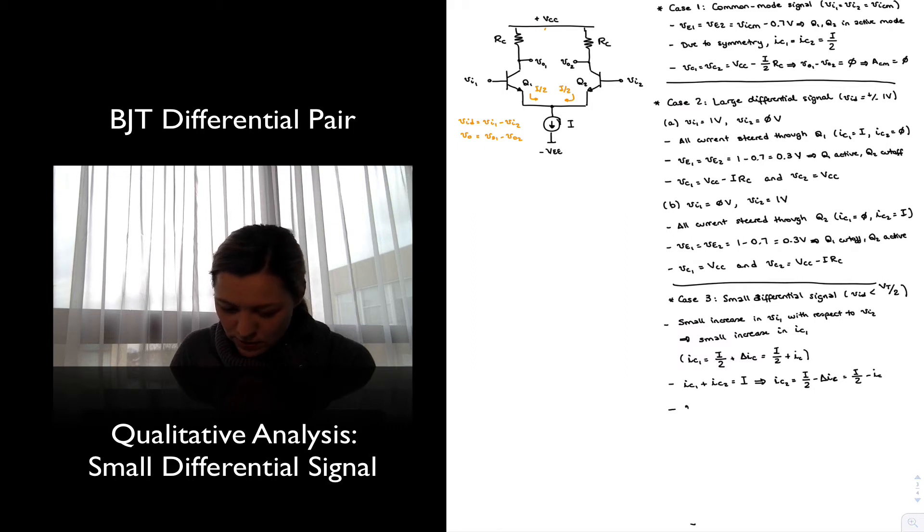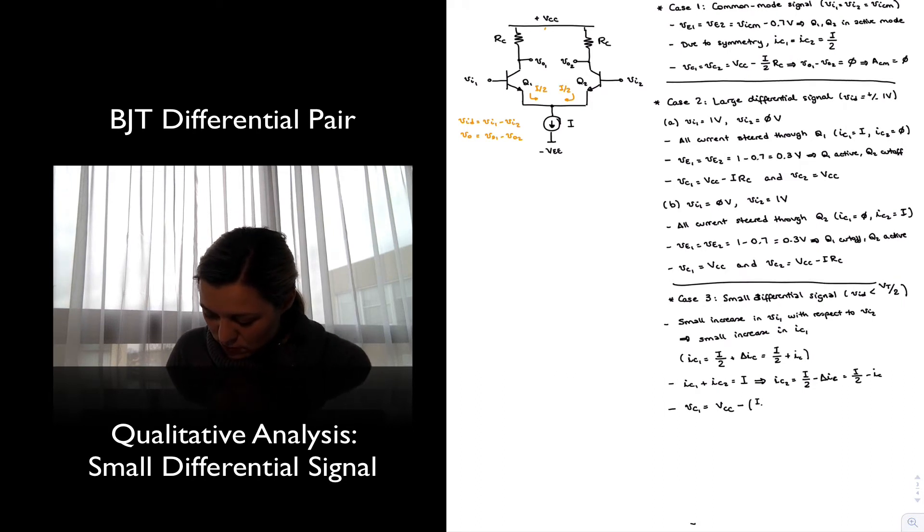Basically, we can write V_C1 is going to be equal to V_CC minus the current flowing through the resistor times the resistance. Now, the current flowing through the resistor used to be I/2, but now has increased by an amount delta I_C. So I/2 plus little i_c, or I'll give it as delta I_C so that nobody gets confused, times R_C.